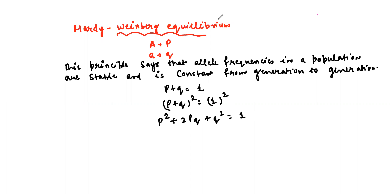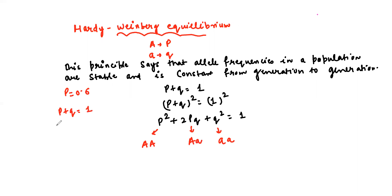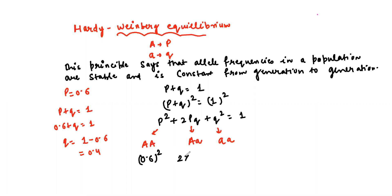So p² represents homozygous dominant (AA), 2pq represents heterozygous (Aa), and q² represents homozygous recessive (aa). Given p = 0.6, q = 1 − 0.6 = 0.4. So p² = 0.6², 2pq = 2 × 0.6 × 0.4, and q² = 0.4².